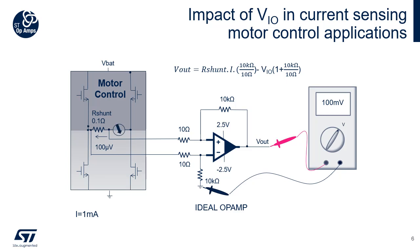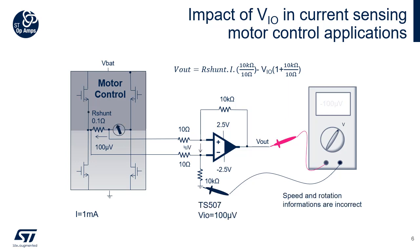In this example, the signal is amplified by 1000. With an ideal OpAmp where VIO equals 0, only the first term of the equation is valid, and we can read an output voltage of 100 millivolts. But as we said previously, the world is not perfect and the ideal OpAmp doesn't exist. If we use a TS507 OpAmp with a maximum positive VIO of 100 µV at ambient temperature, we can see that the output voltage is minus 100 µV — far from the expected 100 mV — meaning that the speed information is completely incorrect.